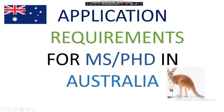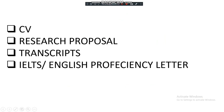First of all, let's have a look at the documents you must have while applying for MS or PhD. You must have an updated CV, a research proposal, transcripts, and an English language proficiency certificate. Most of the time you must have IELTS, but in very rare cases you may provide an English proficiency letter from your university. These are the basic documents required when applying for these programs.